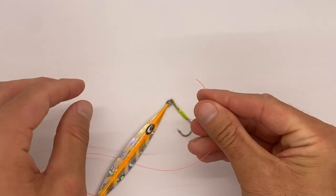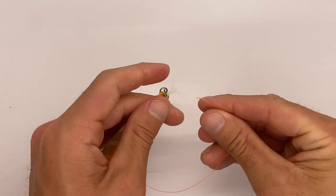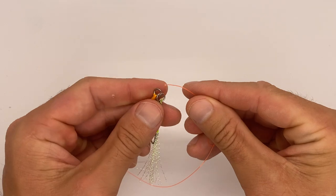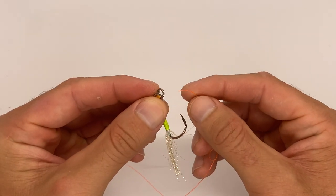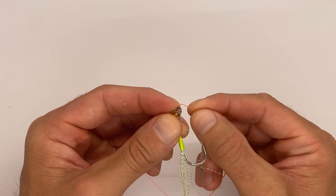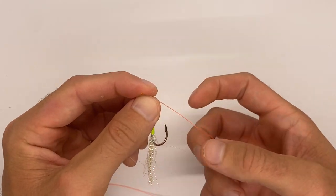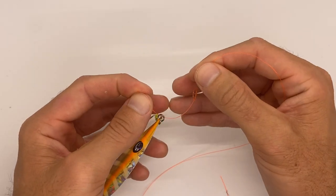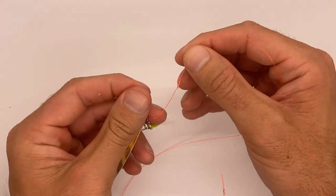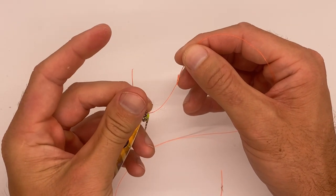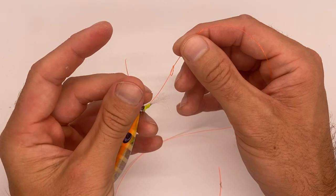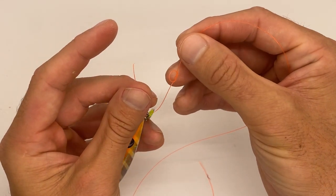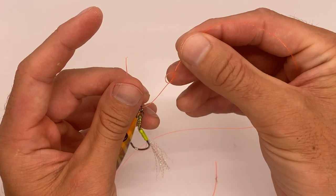Now, what you want to do is take that end and put it through, not the split ring, but the solid end of this jig, just like that. So you've got the line through your solid top end of your jig, and you've got your overhand knot right there.